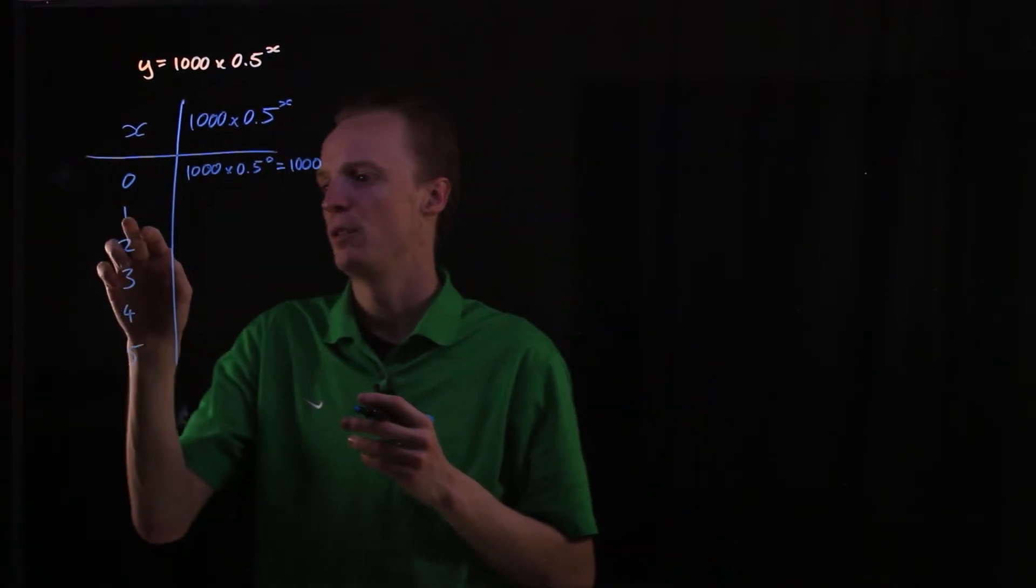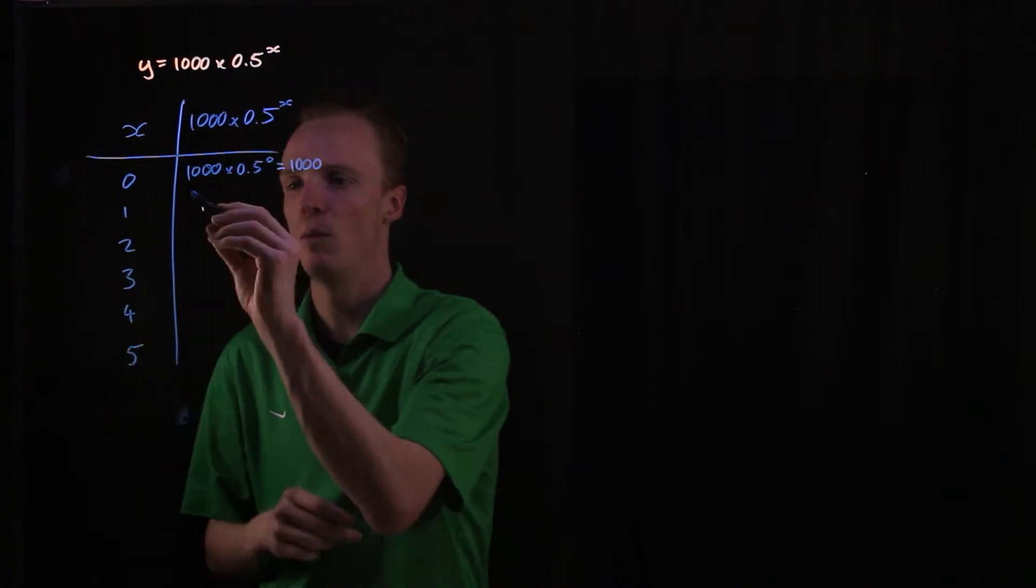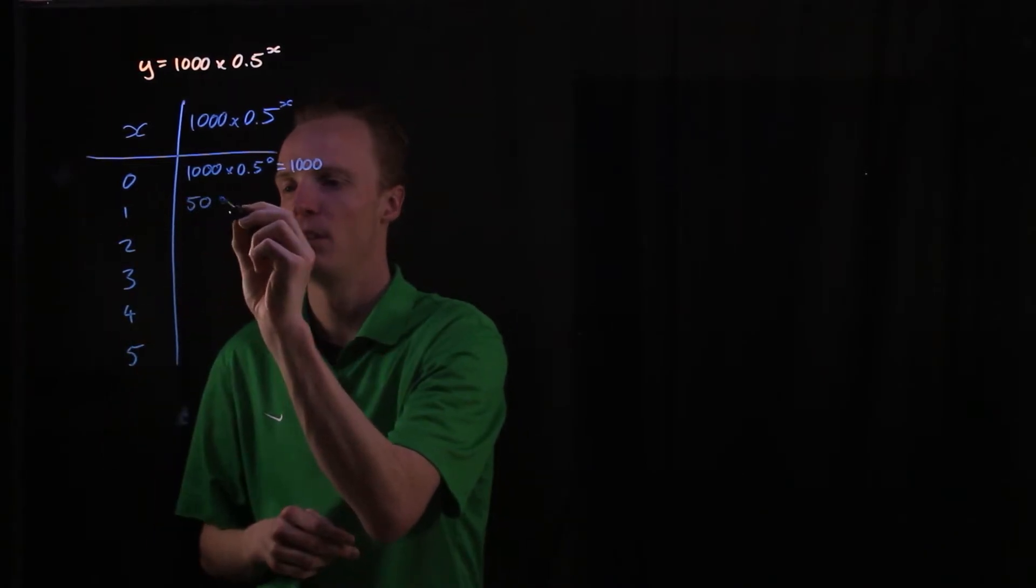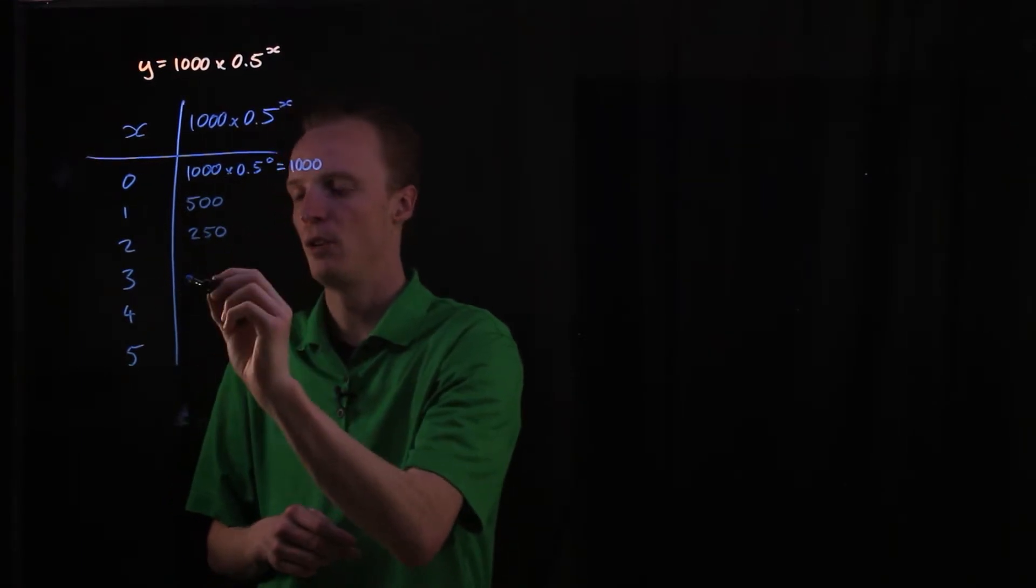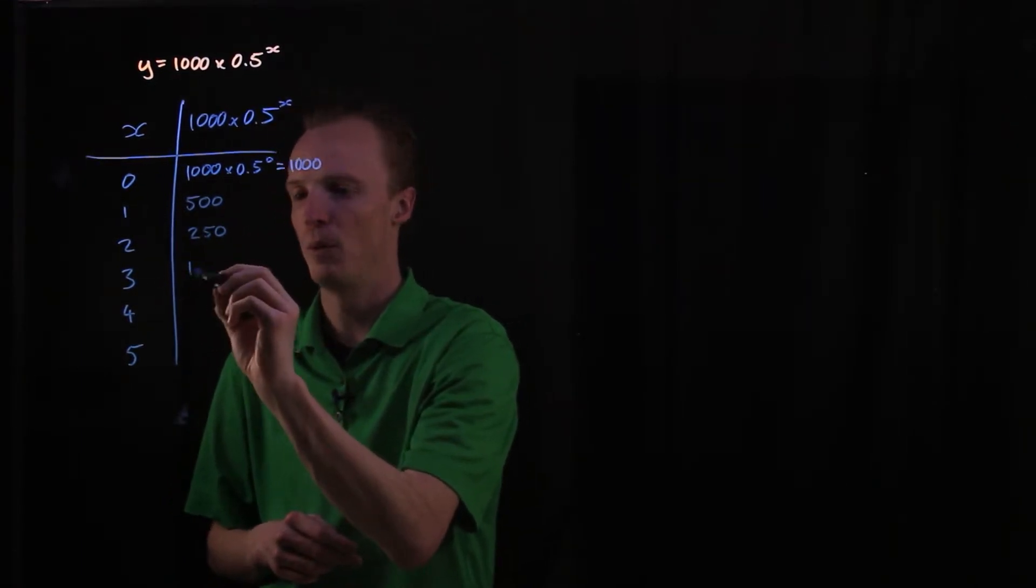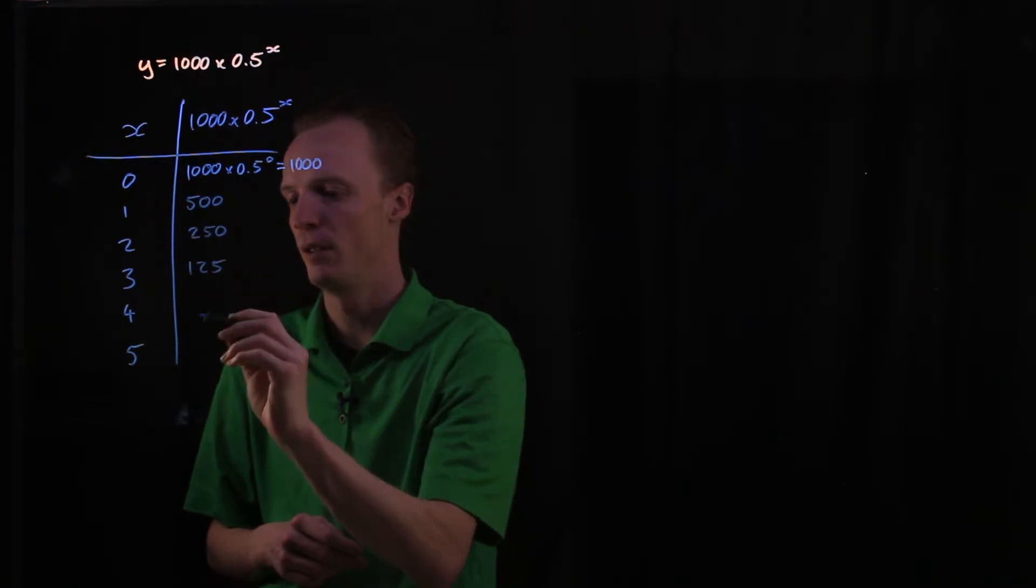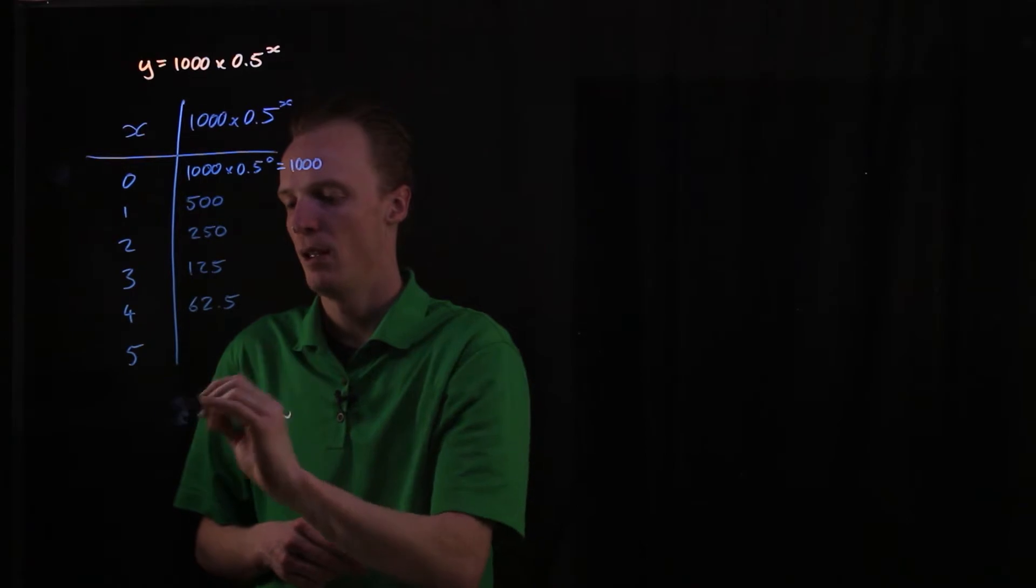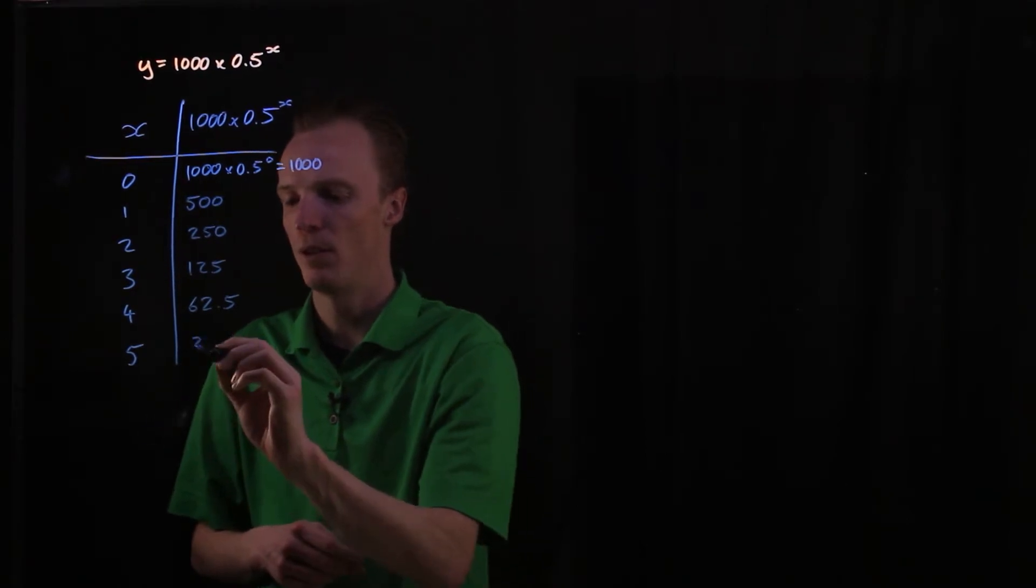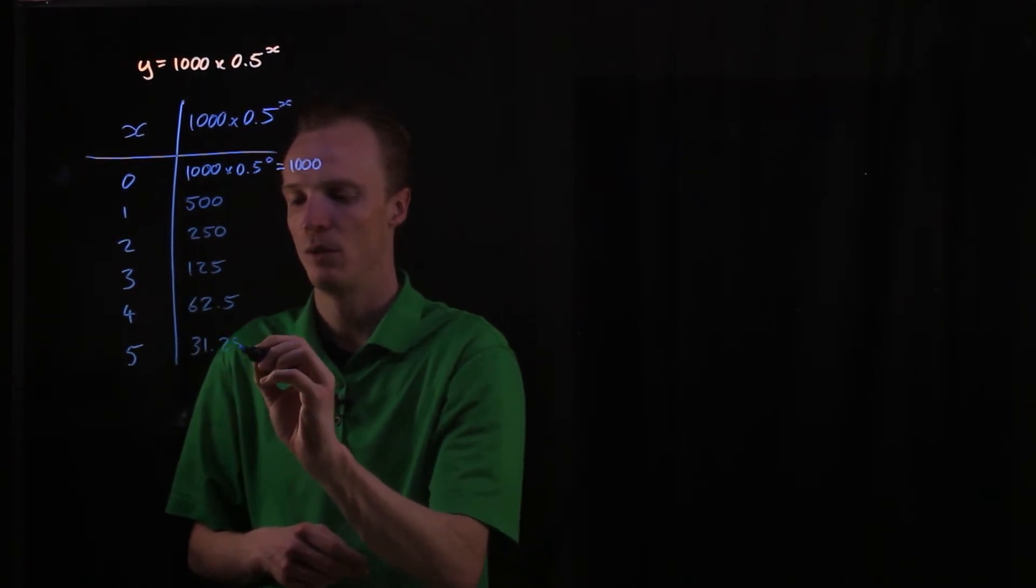So when we go to put this 1 in we'll end up with 500. The value of 2 we'll end up with 250. The value of 3 we'll end up with 125. The value of 4 we'll end up with 62.5. And the value of 5 will be 31.25.